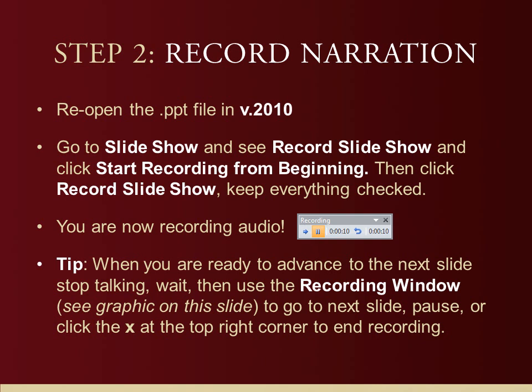Step two: record the narration. Reopen that PowerPoint file in 2010, go into the ribbon at the top and click Slide Show. You'll see the Record Slide Show function — click Start Recording from Beginning, meaning the beginning of your presentation, and another dialog box will open. You can look through the ribbon all you wish, but you're not going to see anywhere where you can change the audio quality. So it's really missing from 2010 — that's why I'm using 2007 first and then opening it back up in 2010.